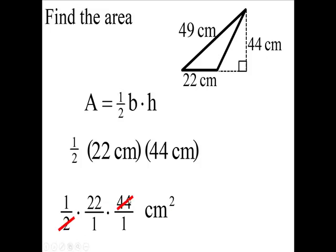We're going to cancel that 2 and that 44. You could do either the 22 or the 44. Let's cancel the 2 and the 44. Divide both of them by 2: 2 divided by 2 is 1, 44 divided by 2 is 22.